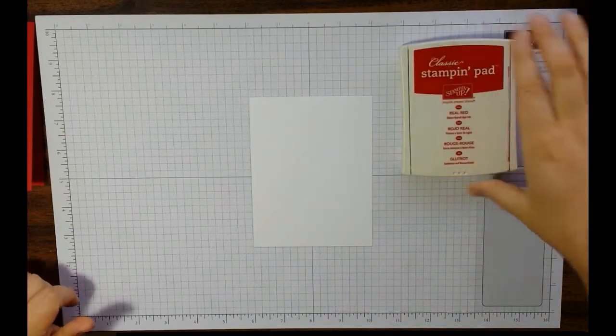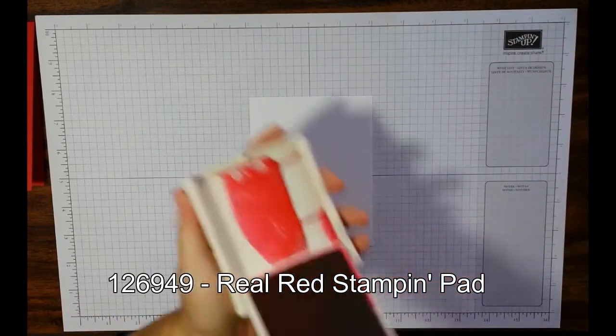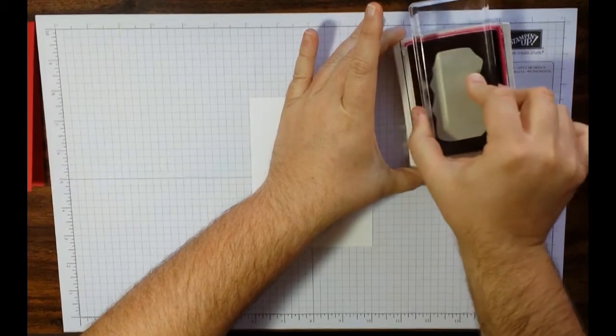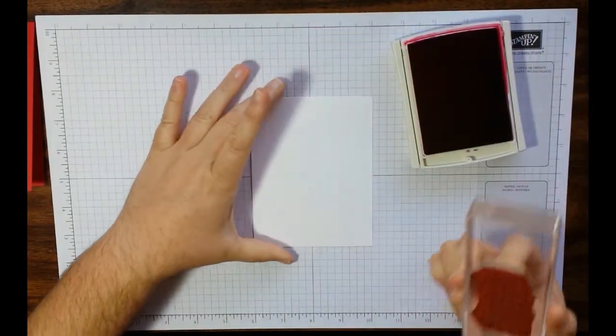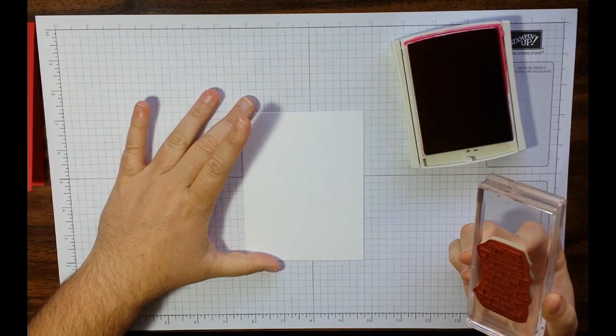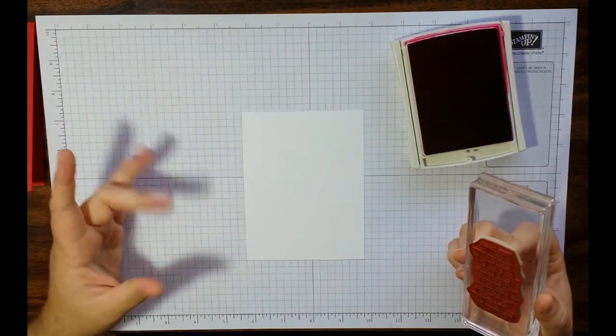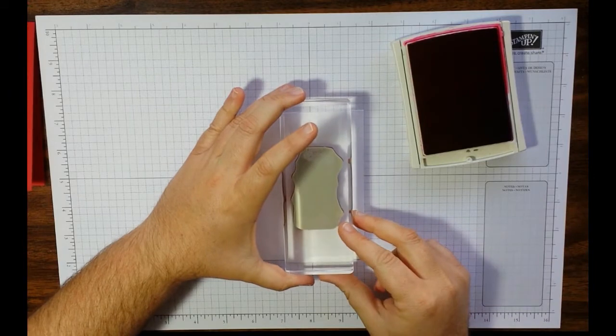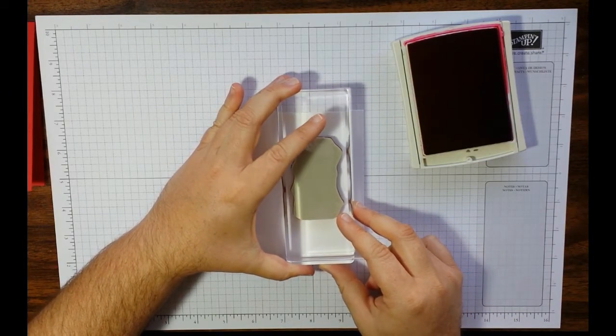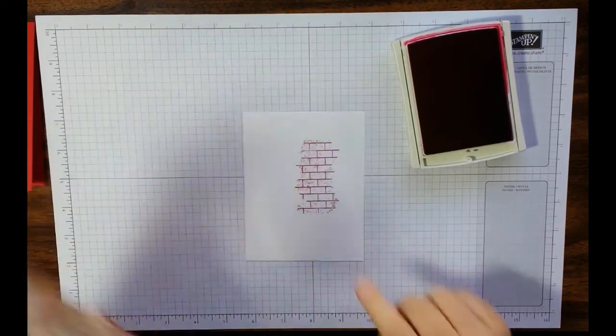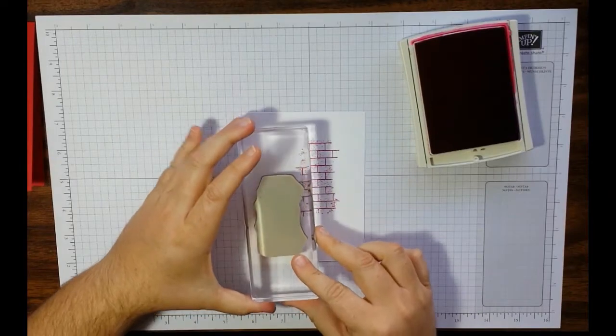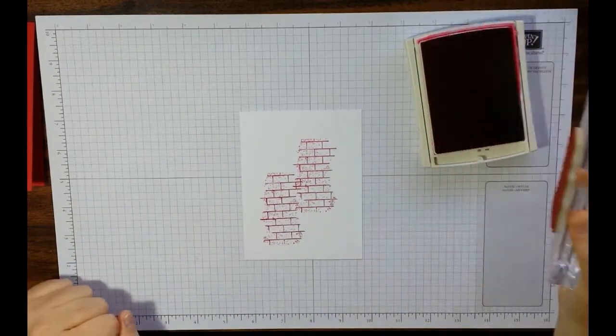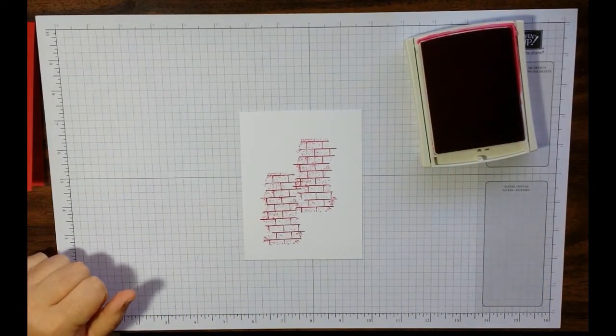We need Real Red ink. Go ahead and open up your Real Red. So, we are going to ink up our lovely brick. And if you guys remember back to the brick vampire card, we're going to do this same basic technique. So, we're going to stamp one a little higher than center. Straight down, straight up. And then one a little lower. I like it. I like that a lot.